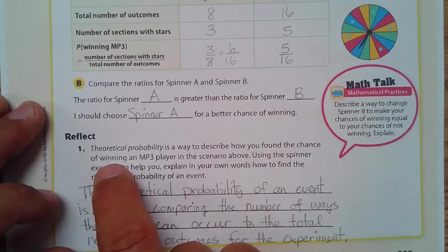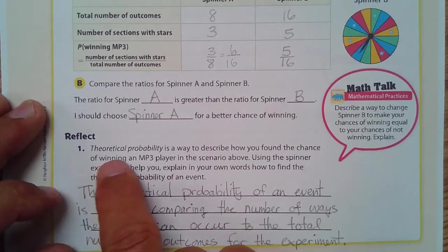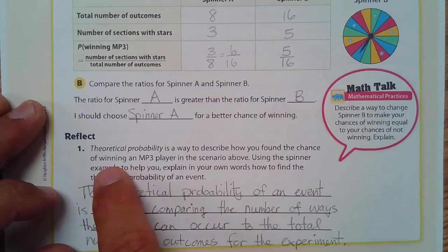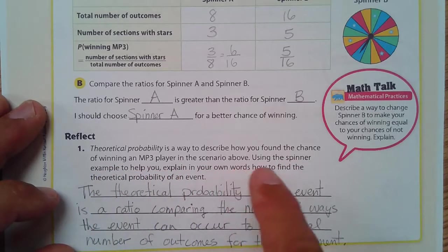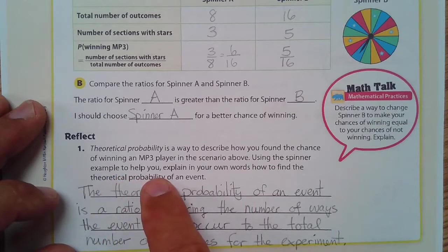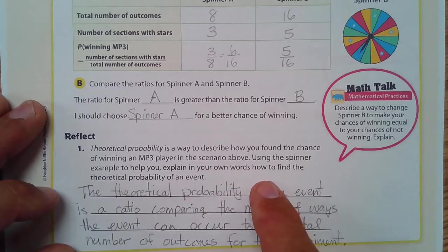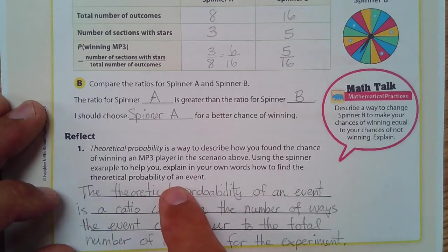So let's reflect on this. The theoretical probability is a way to describe how you found the chance of winning an MP3 player in the scenario above. Using the spinner example to help you, explain in your own words how you find the theoretical probability of an event.